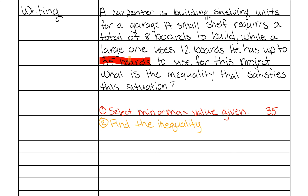The second step is to find the inequality by looking around that big number. In this problem it says 'he has up to 35 boards.' Is it possible for him to have 36? No. Can he have 35? Yes — up to 35 includes 35. Can he have 34? Yes. So it includes 34 and 35 but not 36, which means it's less than or equal to 35.